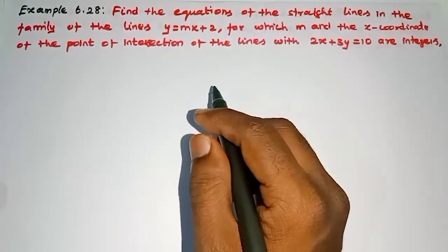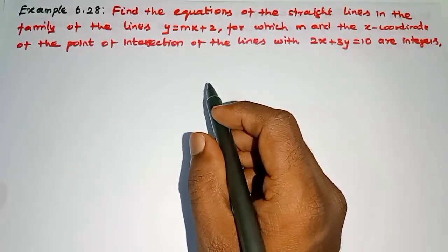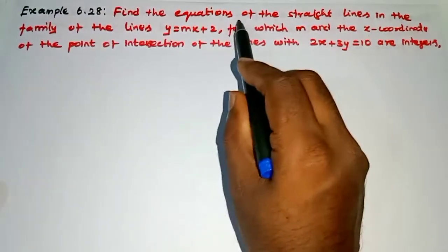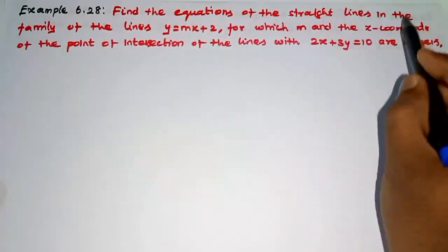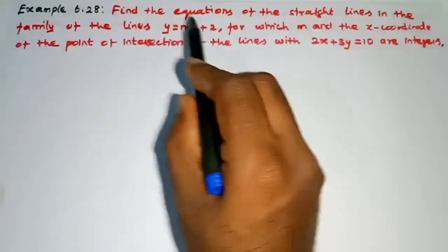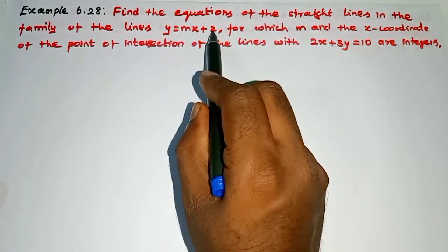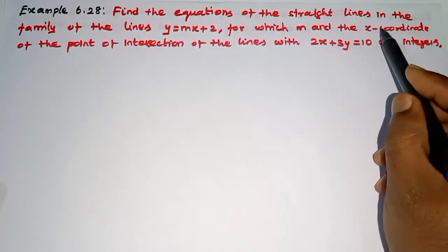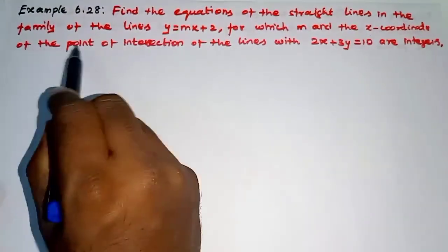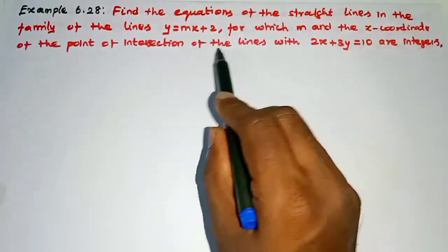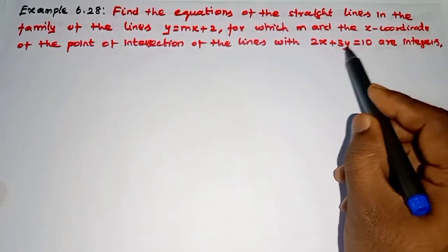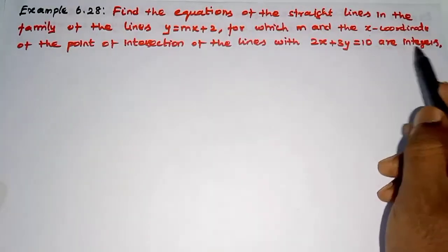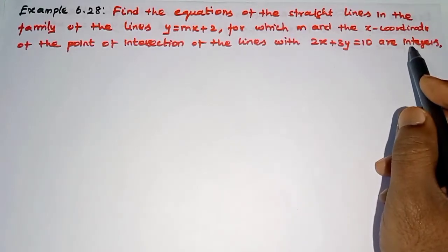Hi student, this is Sillambo Max Division 11th Standard Example 6.28. Find the equations of the straight lines in the family of lines y = mx + 2 for which m and the x-coordinate of the point of intersection of the lines with 2x + 3y = 10 are integers. We can get the equations of the straight lines.